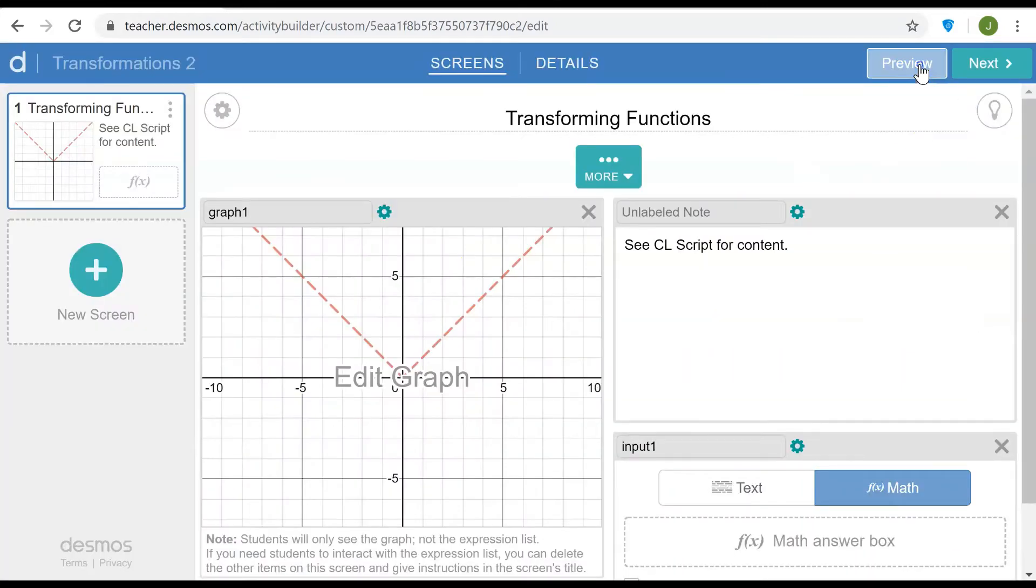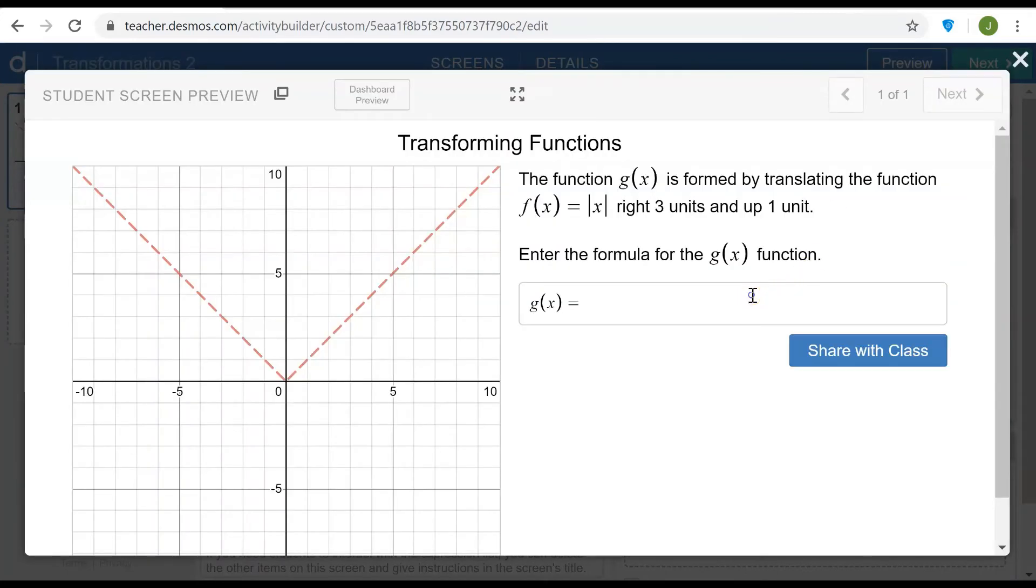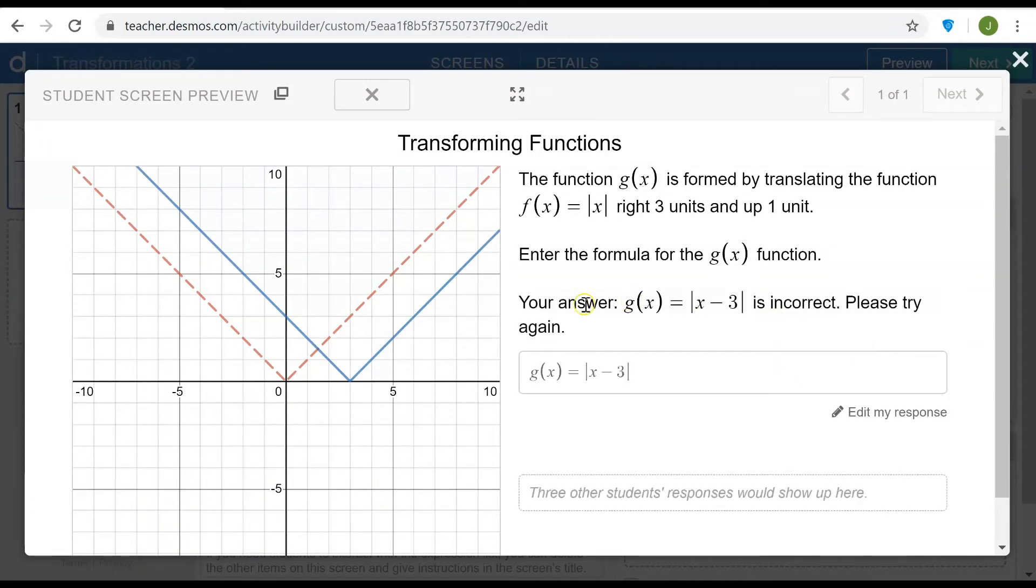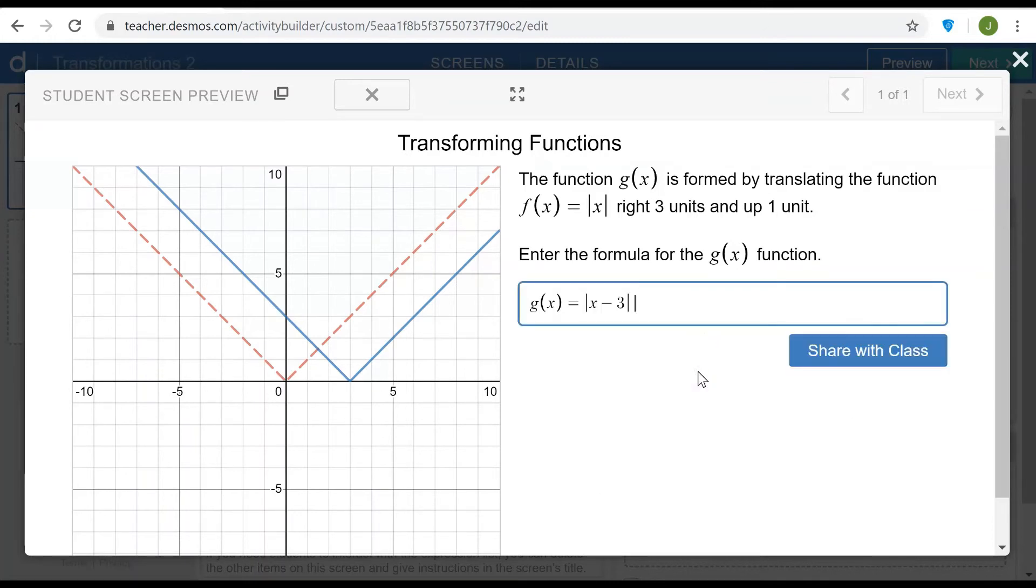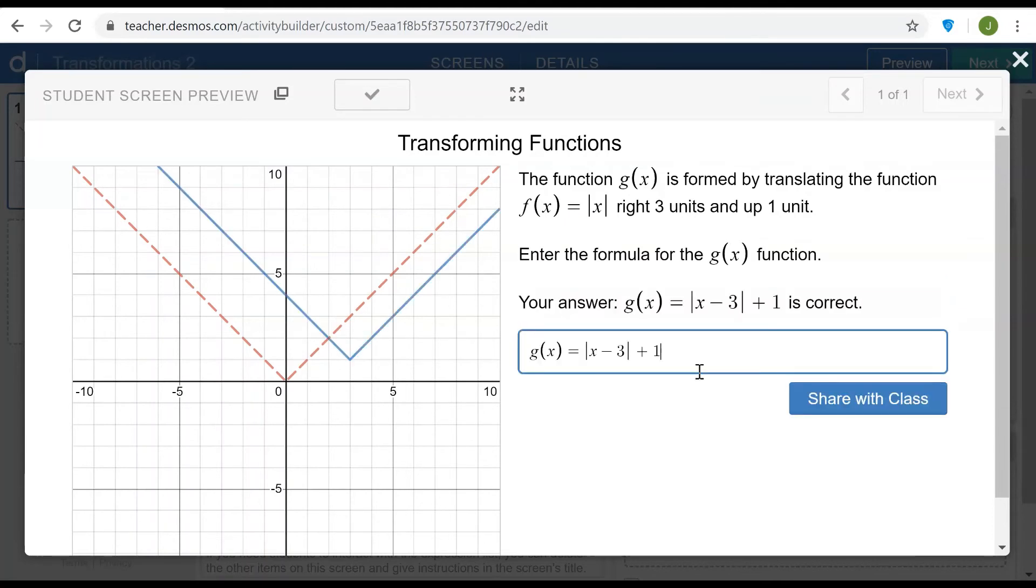And now let's go back to the preview and see what happens. So if I type in the absolute value of x minus 3 and leave off the upward translation, we see the answer is incorrect, please try again. If I go back and try again it reverts because the statement is now active and not submitted. So it goes back to the default and let me add plus 1 and this time it was correct.